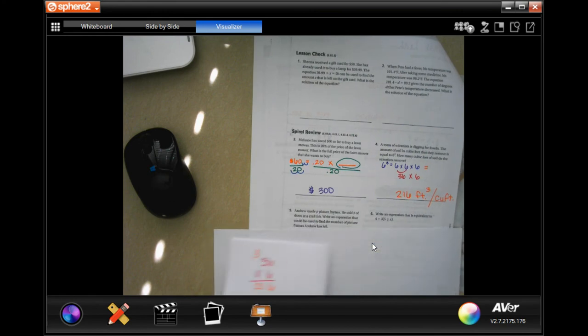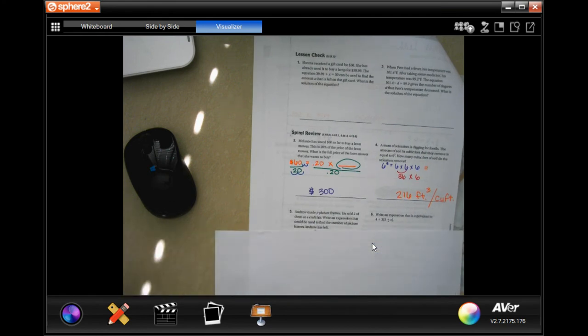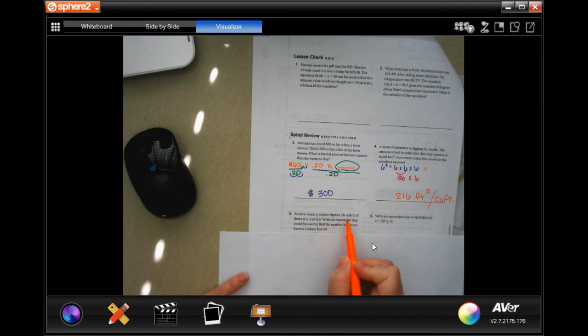So now, we're going to do number five. And it says, Andrew made P picture frames. He sold two of them at a craft fair. Write an expression that can be used to find the number of picture frames Andrew has left. So, he started with P and two of them left when he sold them. P minus 2. That's it, guys.